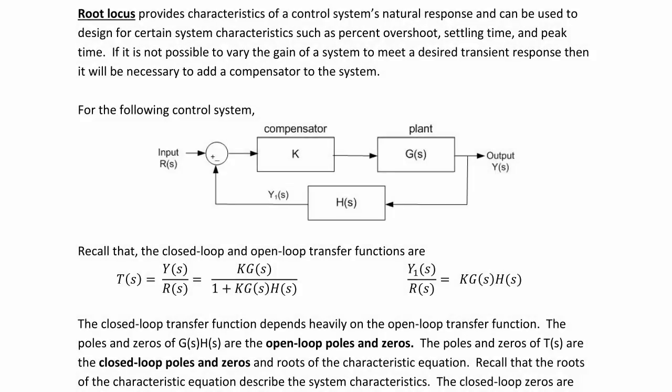Root locus provides characteristics of a control system's natural response and can be used to design for certain system characteristics such as percent overshoot, settling time, and peak time. If it is not possible to vary the gain of a system to meet a desired transient response, then it will be necessary to add a compensator or controller to the system.